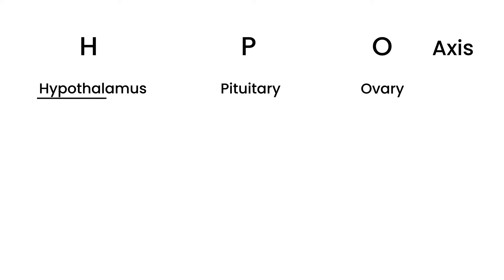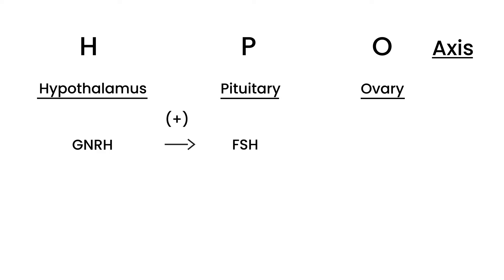The hypothalamus and pituitary are in the brain, and the ovary is in the female pelvic location. Each of these secretes hormones that are involved in menses, and if anything disrupts this axis it can cause amenorrhea. From the hypothalamus you have GnRH — gonadotropin releasing hormone. From the pituitary you have FSH — follicle stimulating hormone. And from the ovary you have estrogen. These are the hormones involved in the menstrual cycle.